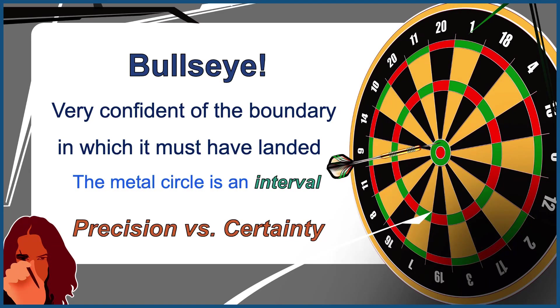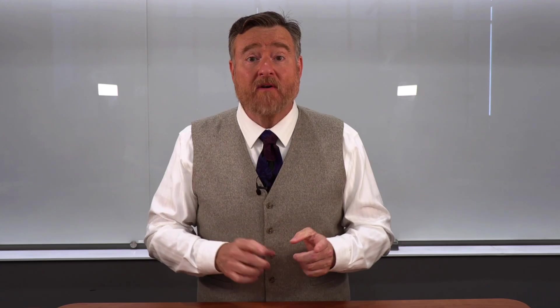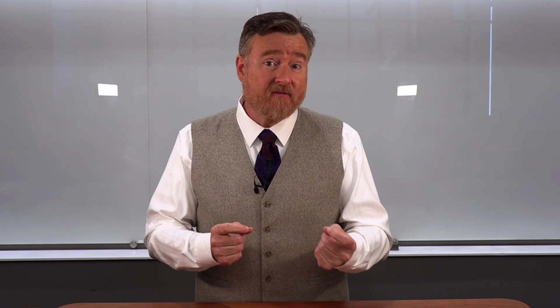Here we have a trade-off between precision and certainty. The point estimate — the dart — is very precise, but not certain. The interval estimate — the bullseye — is very certain, but not very precise. However, the point estimate and the interval estimate work together to give us the best of both precision and certainty.